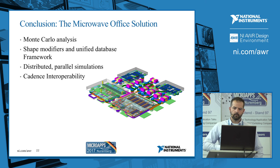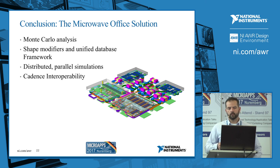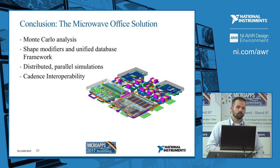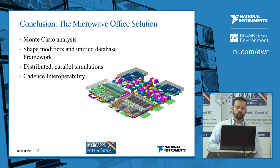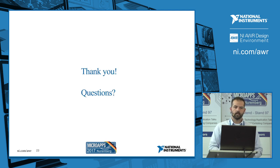In conclusion, Monte Carlo analysis can give meaningful yield results with many fewer yield trials than a corners analysis when you have a large number of independent variables. Shape modifiers and the unified database in Microwave Office — the connection between the schematic and the layout — make it really easy to look at manufacturing variations of a module. Being able to distribute and simulate your EM simulations in parallel, you can get your results back way faster. And obviously, the tool interoperability — being able to transfer between Microwave Office and Cadence — allows the designer to work in the tool that makes the most sense. If anyone has any questions, I'd be happy to answer those. Thank you very much.